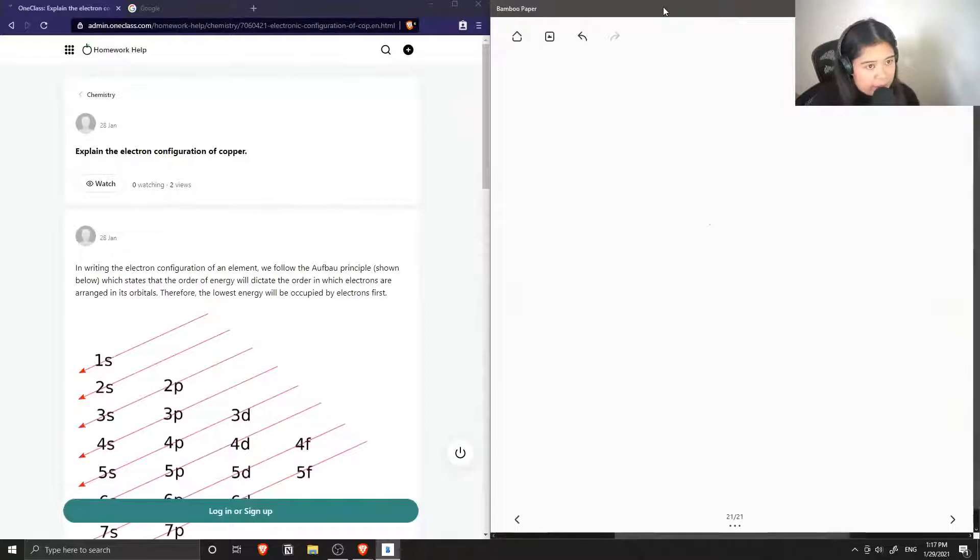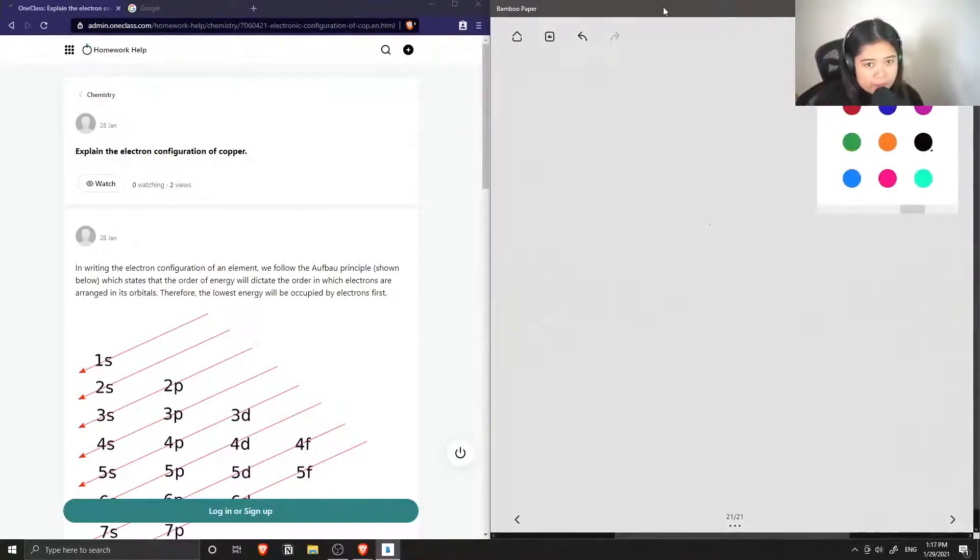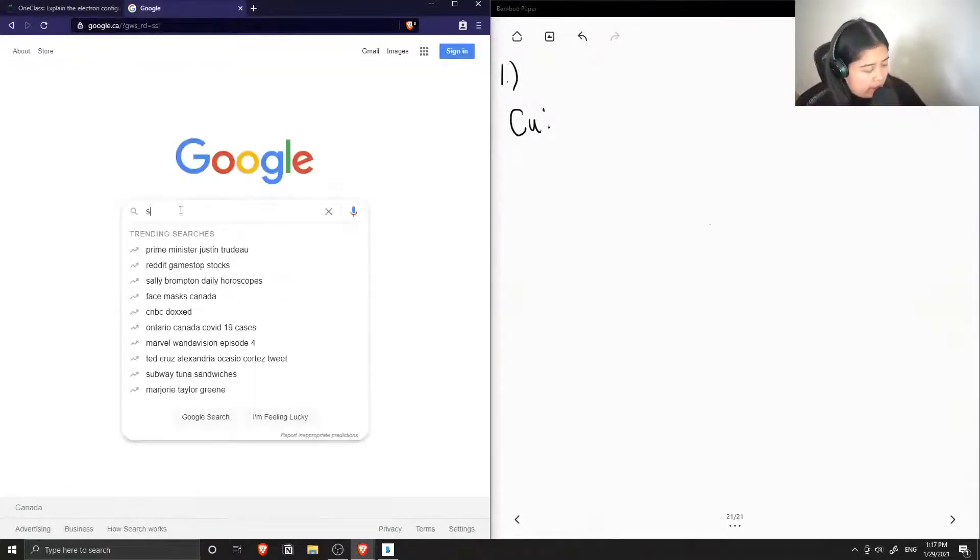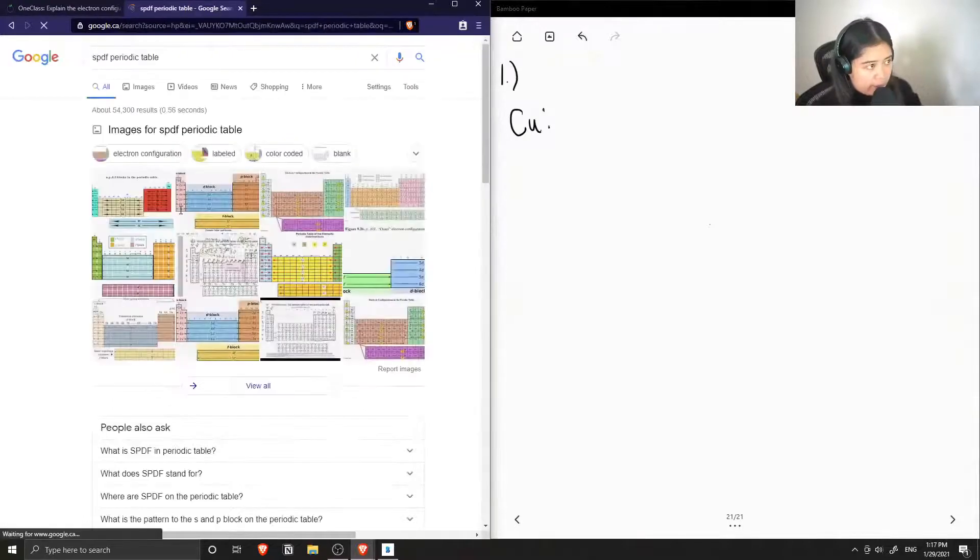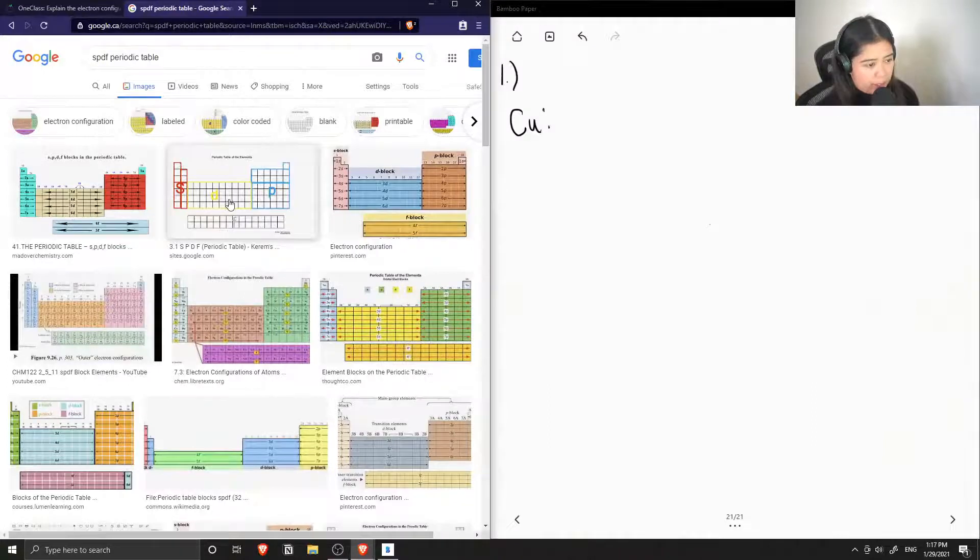Question one says to explain the electron configuration of copper. So first let's write out the electron configuration for copper. The first step in writing the electron configuration is to first divide your periodic table into the different orbital shells.